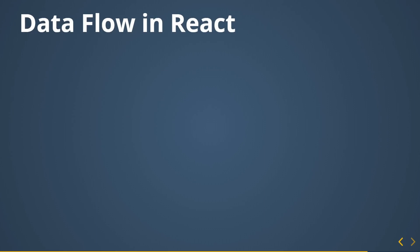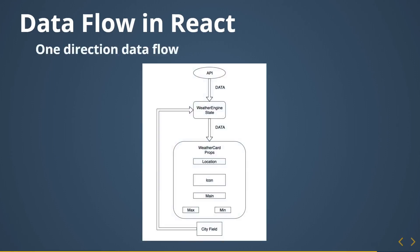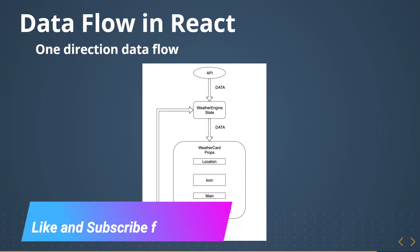Data flow in React is quite strict and that's what makes it readable. It's only one direction of data flow. Imagine a component called WeatherEngine — it contains all other components, is where API requests happen, and contains the state. That component takes state updated from the API, then passes that data as props to WeatherCard, which changes the background based on temperature and also passes props down to Location, Icon, Main, and min/max temperature child components.